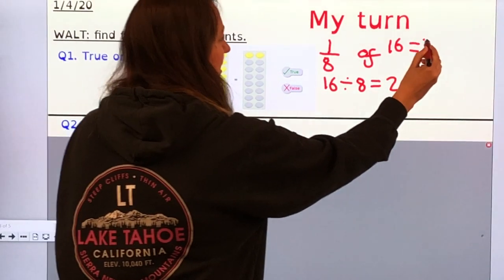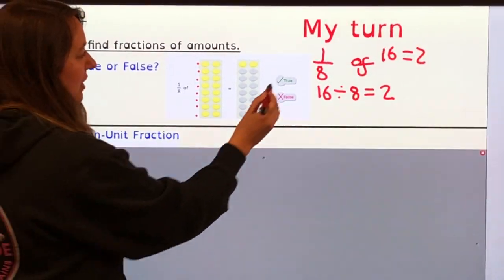So one-eighth of 16 is 2, that's what that picture shows, true.